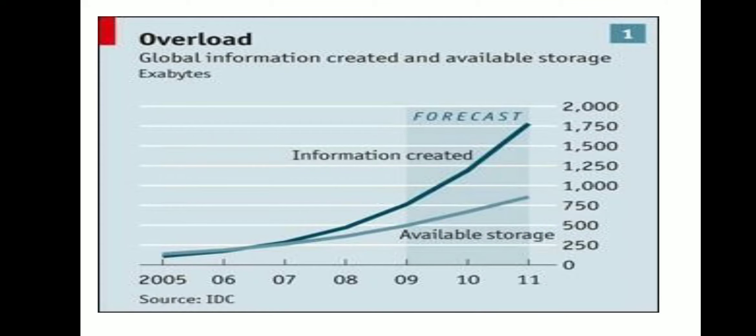Data streaming transmits from a source and is received at a processing end in a network. It is a continuous stream of data flow between the source and receiver, which is processed in real time. That is called a stream.